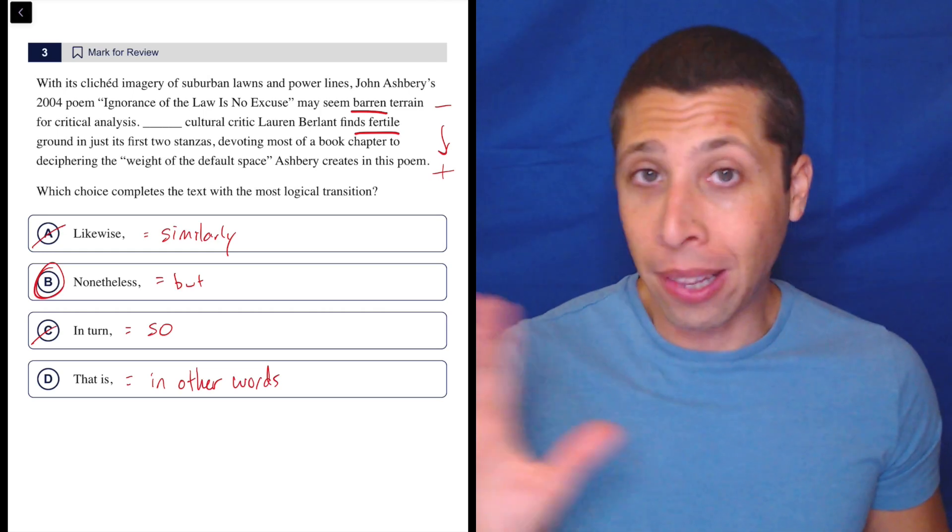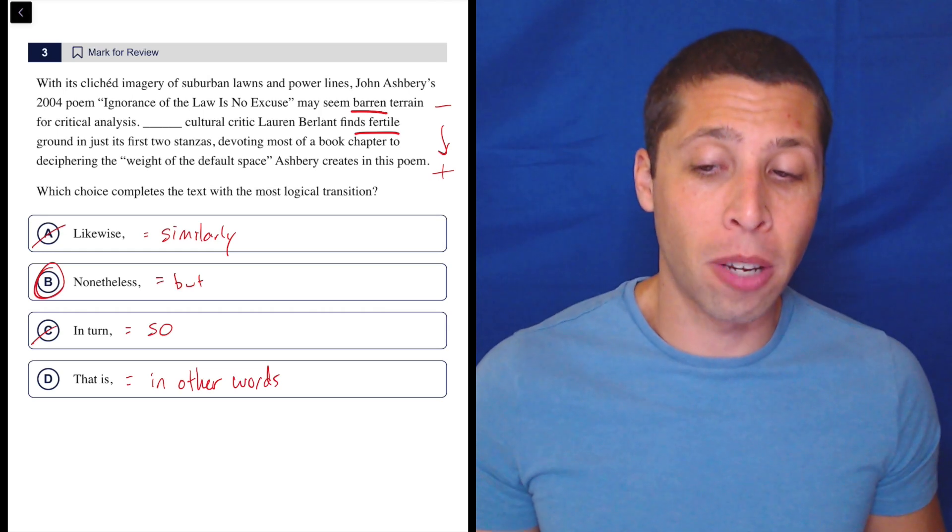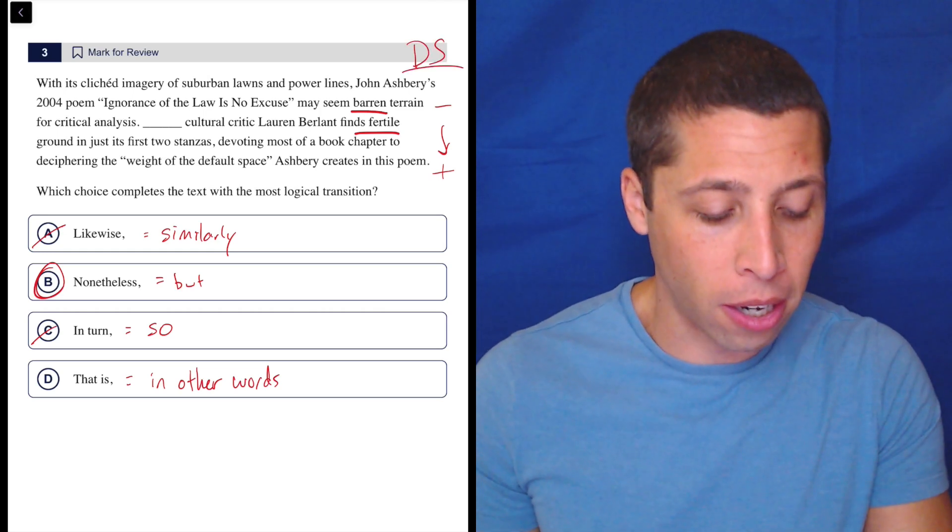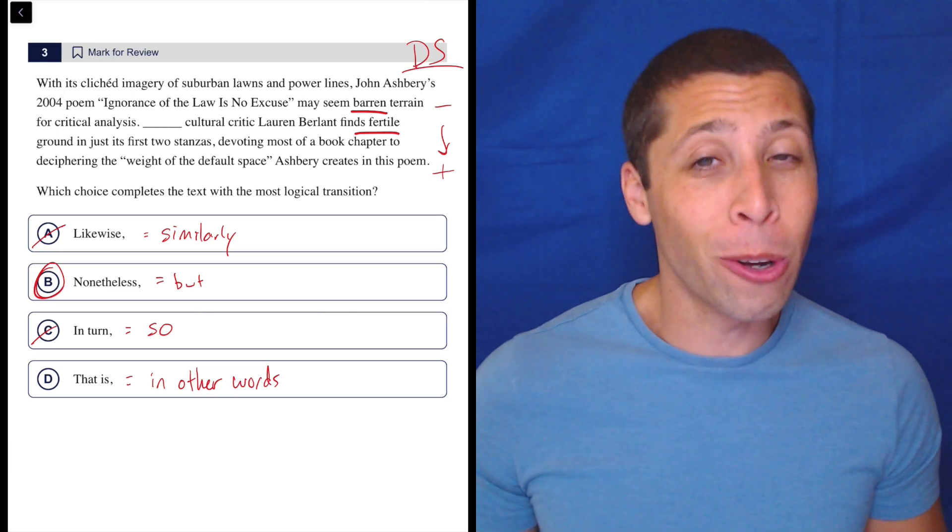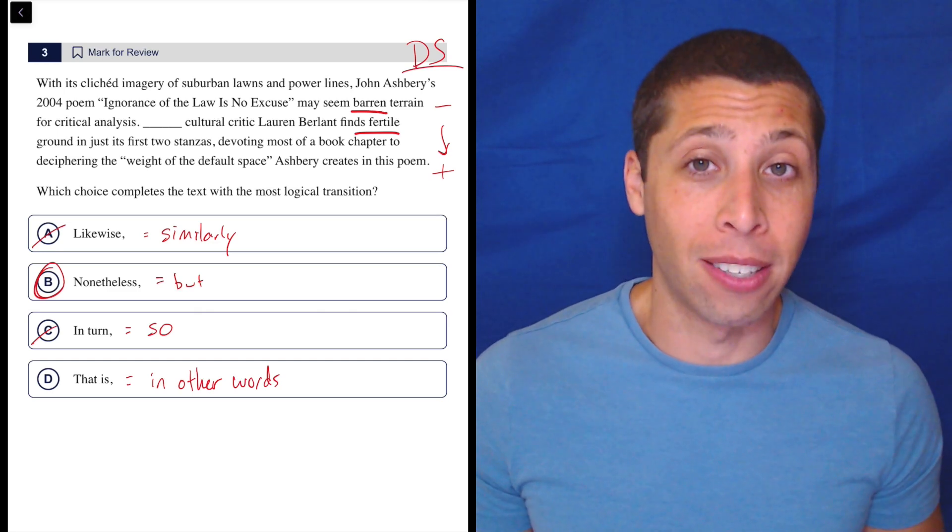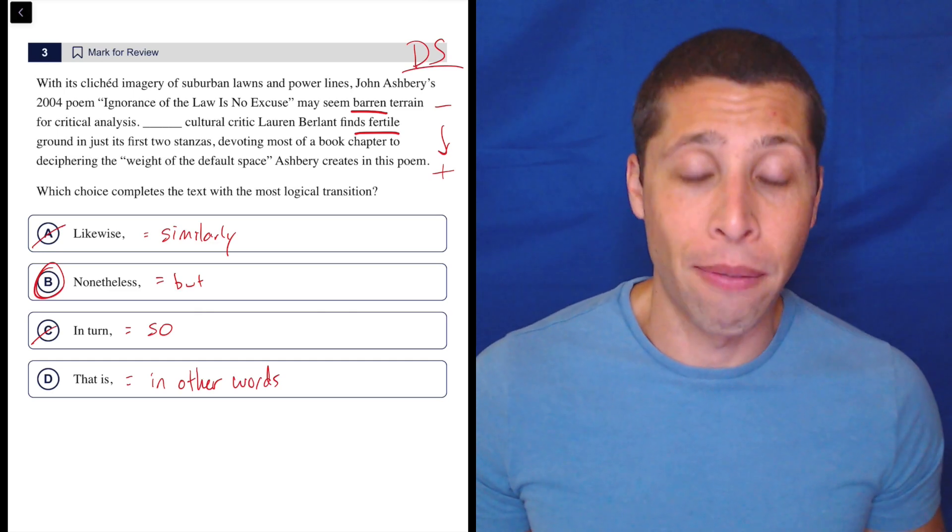So a lot of great things we can get out of this question, but I do love that the dumb summaries here, the connotations really help us, but you do need to know some vocab in order to be able to pull that contrast out quickly and confidently.